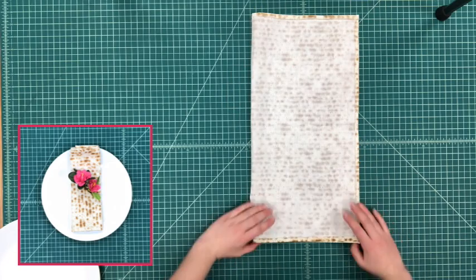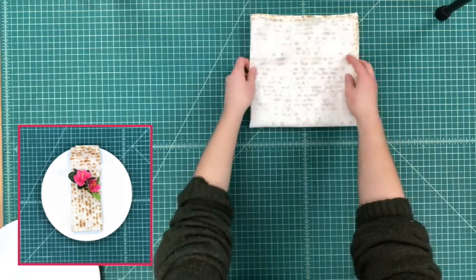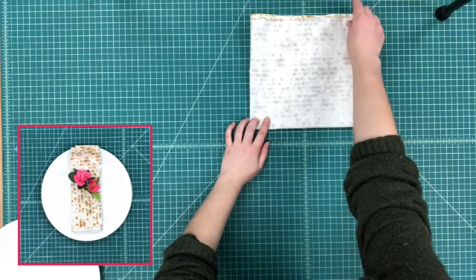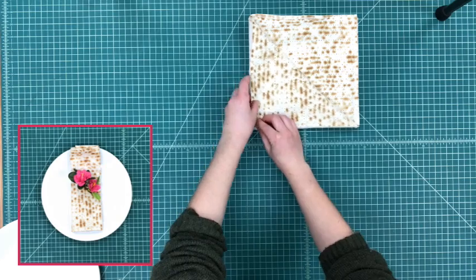Once you fold up the bottom half over the top half, the top right corner will have all of the open corners. So take the first corner and bring it down so that the opposite corners meet.